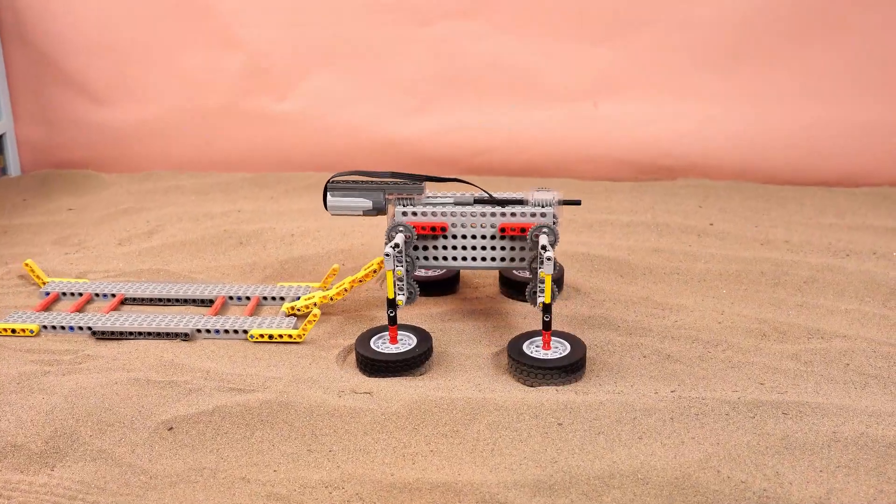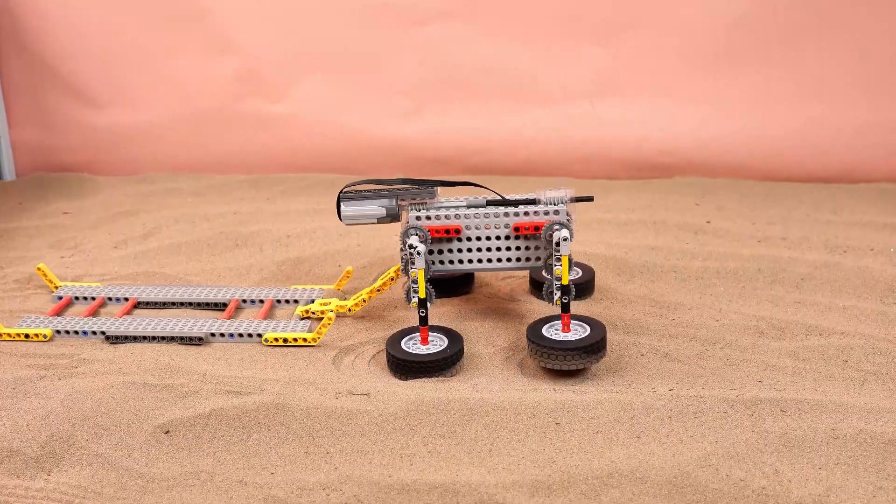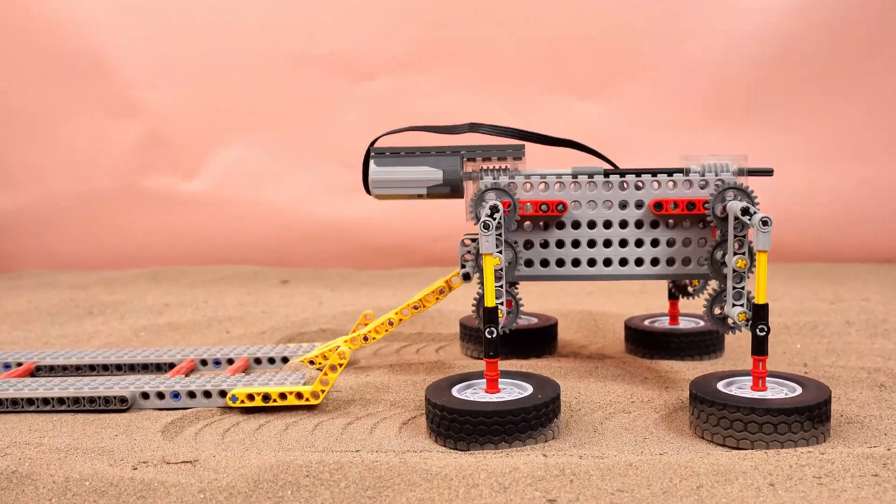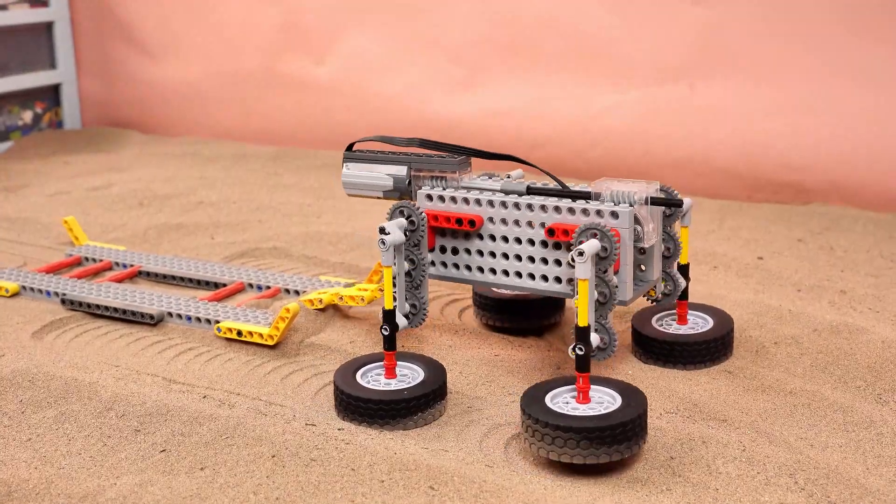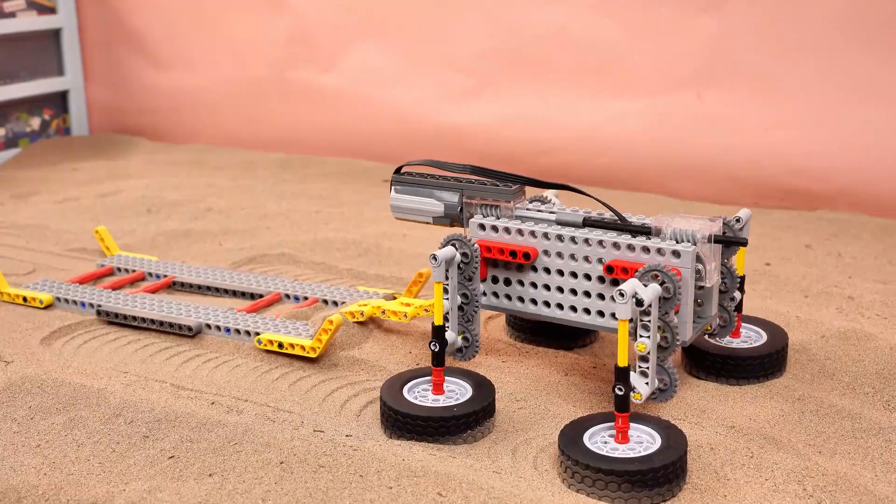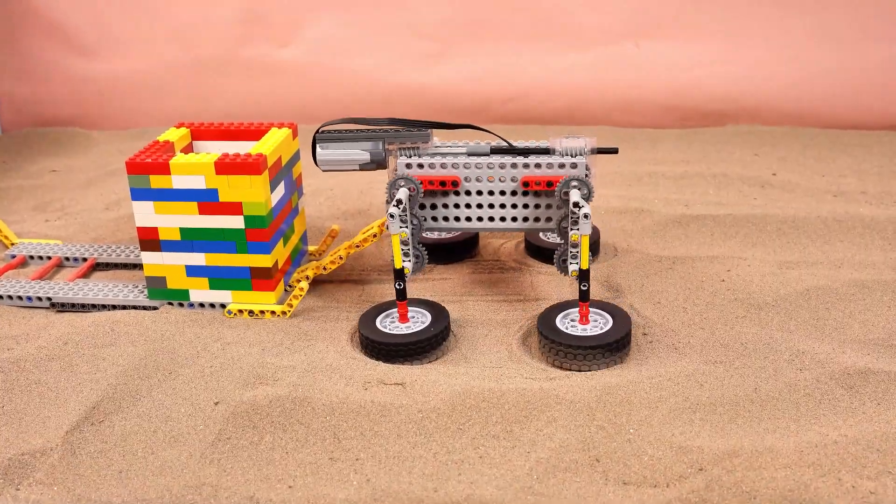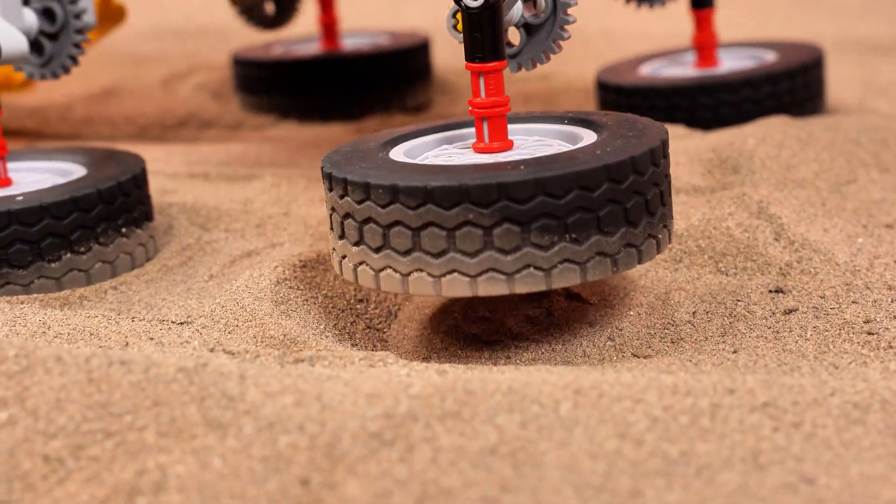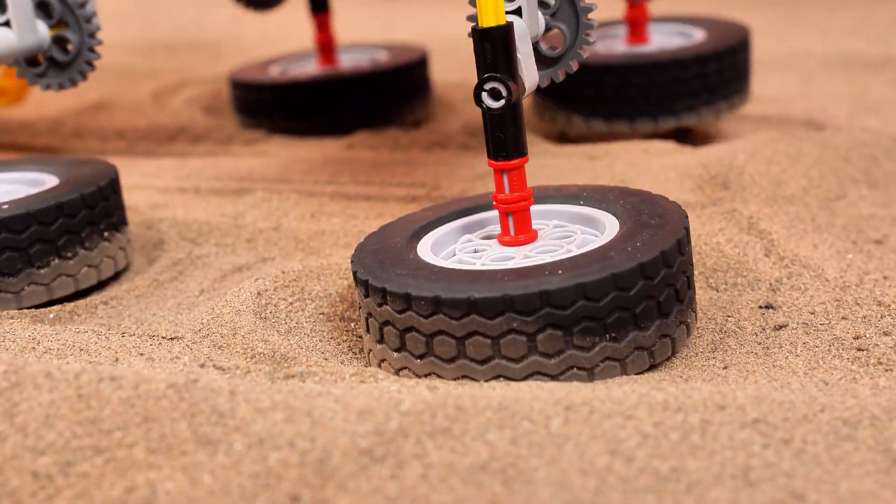Here we go. It pulls the cargo sled pretty easily. What about one cargo sled plus one block? Can't move forward.